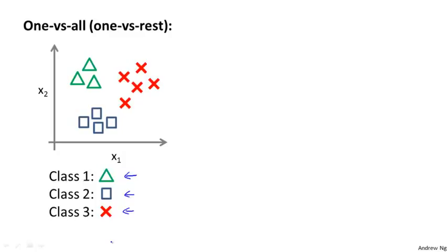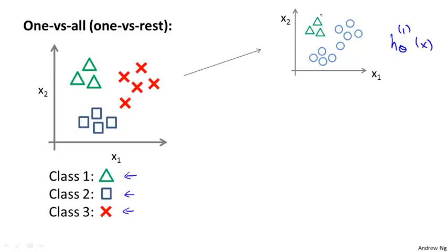What we're going to do is take our training set and turn this into three separate binary classification problems. So let's start with class 1, which is a triangle. We're going to essentially create a new fake training set, where classes 2 and 3 get assigned to the negative class, and class 1 gets assigned to the positive class. We're going to fit a classifier, which I'm going to call h subscript theta superscript 1 of x, where here the triangles are the positive examples, and the circles are the negative examples.